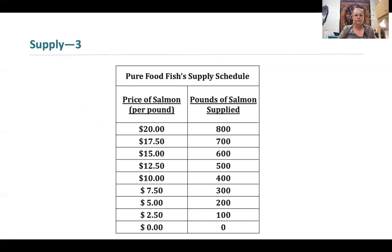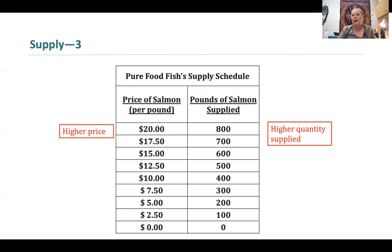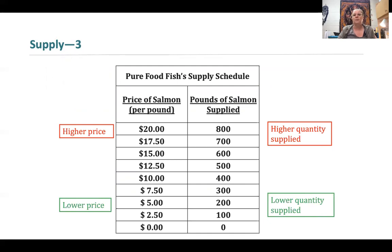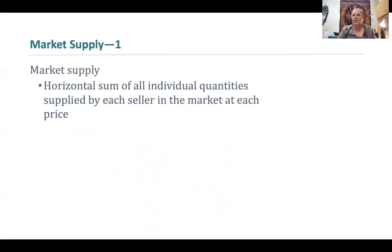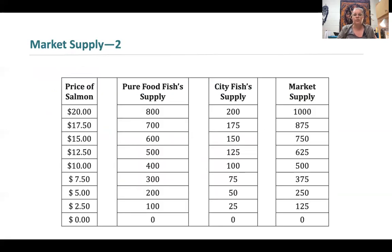Let's look at a firm — Pure Food Fish — supplying pounds of salmon. When the price of salmon is high per pound, they'll want to supply a greater quantity; when the price is low per pound, they'll want to supply a lesser quantity. This is the law of supply at work. Market supply, just like market demand, is simply the horizontal sum of all individual quantities for each seller at any given price. If we have two firms — Pure Food Fish and City Fish — we can add up their individual supply schedules to get total market supply.